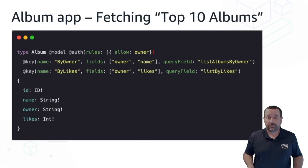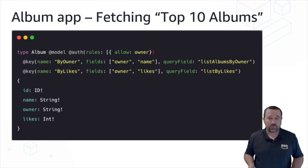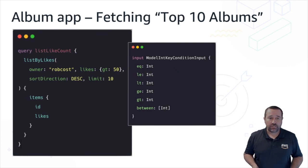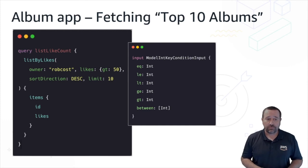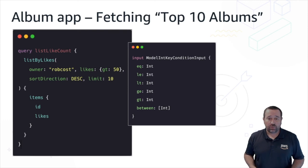Another feature we might want to implement is likes. We extend our schema to include a likes field on our album type and add a by-likes key including the owner field and number of likes, specifying the query field of listByLikes. Now we can do a query from our client for listByLikes, searching for albums from a specific owner, doing a conditional query on likes greater than 50, sorted in descending order, and returning only the first 10. This gives us our top 10 albums — an optimized query on our back end returning only the data we need to our client.